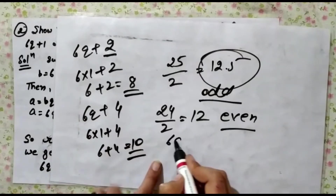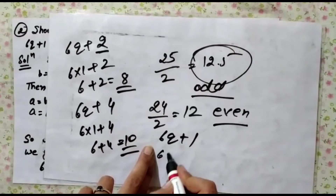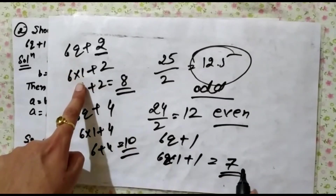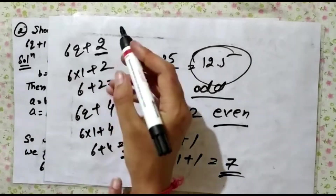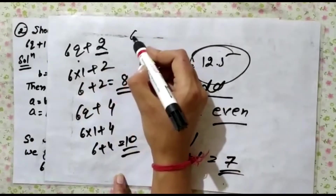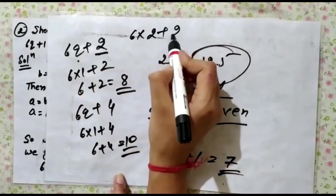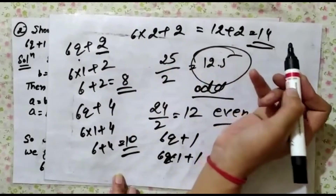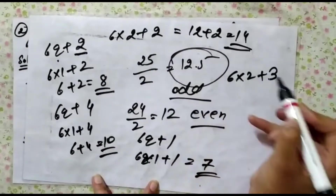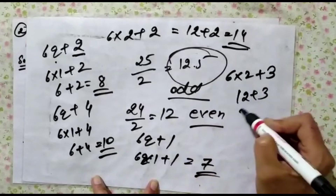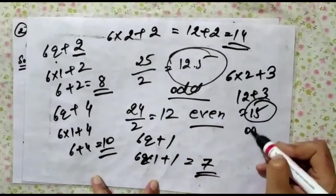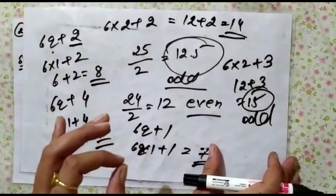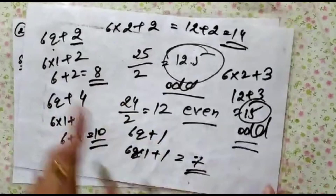But if we take 6q plus 1, then 6 times 1 plus 1 equals 7, which is an odd number. You can take different values of q to check. For example, if q equals 2, then 6 times 2 plus 3 equals 15, which is odd. I am doing this only for your understanding.